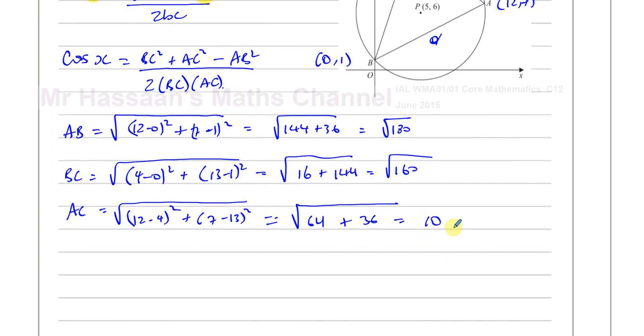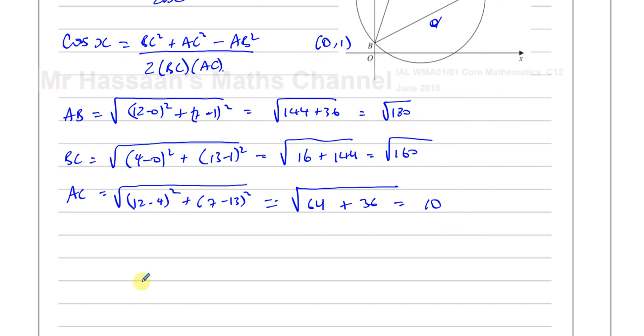Okay, so now we have to apply this formula. So we can say the cosine of the angle X is equal to BC², which is going to be 160 if you square that, plus AC², which is going to be 100 if you square that, minus AB², which is going to be 180. The square root of root 180 squared is 180. Divided by 2 times BC, 2 times root 160, times AC, which is 10. So it's 20 times root 160.